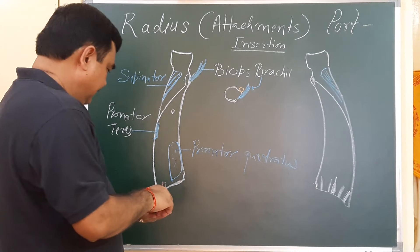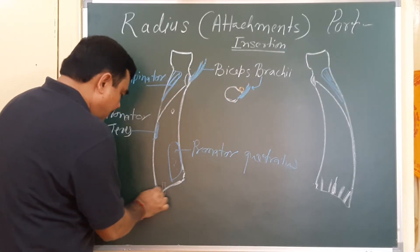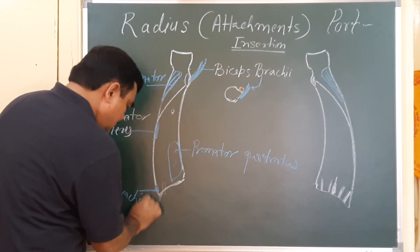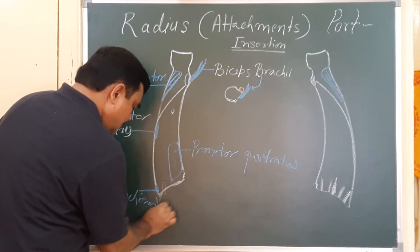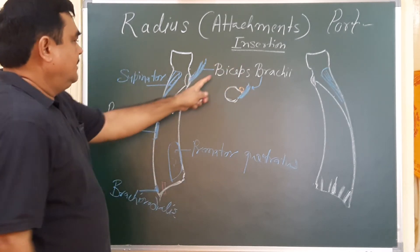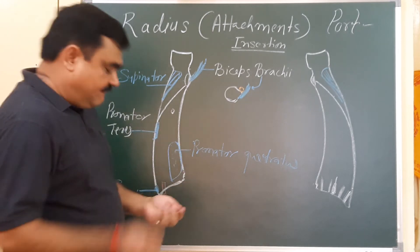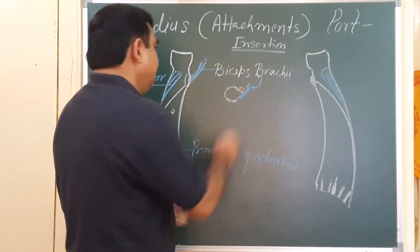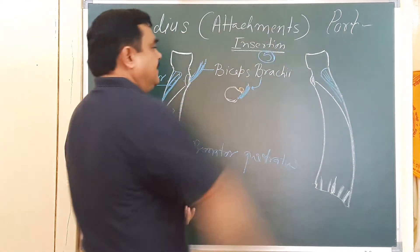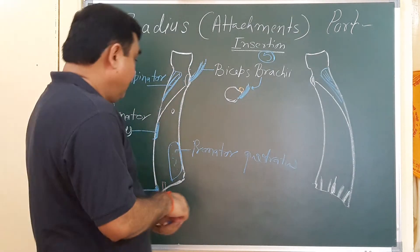And the muscle here is brachioradialis. So you can see there are five muscles inserted in the radius: biceps brachii, supinator, pronator teres, pronator quadratus, and brachioradialis. Now let's look at muscles that take origin from the radius.